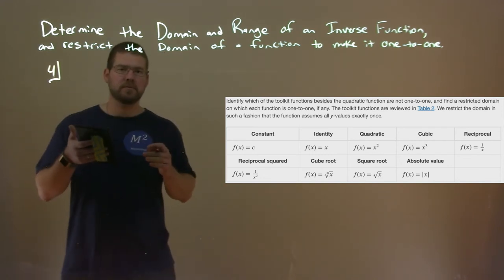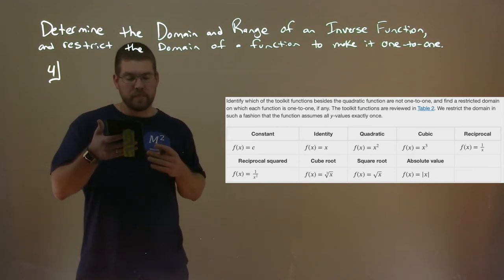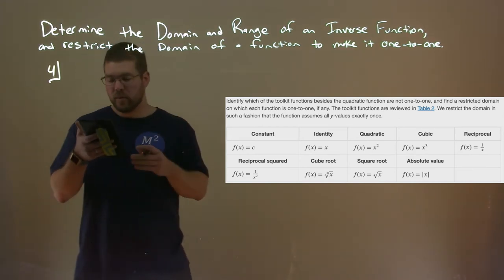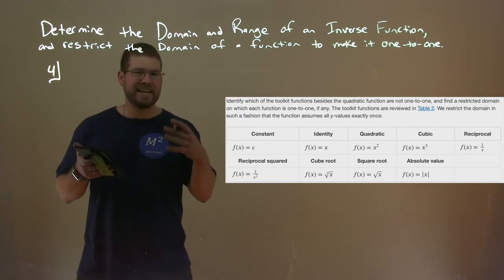The constant function, that straight line across, is not one-to-one. There is no domain except for a single point on which it could be one-to-one. So the constant function has no inverse.